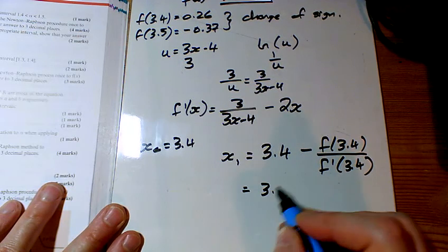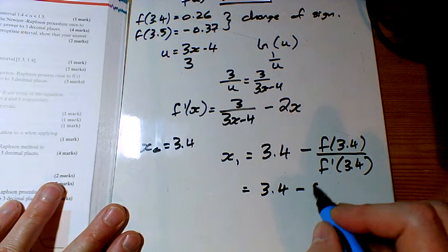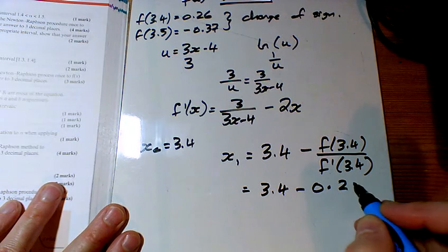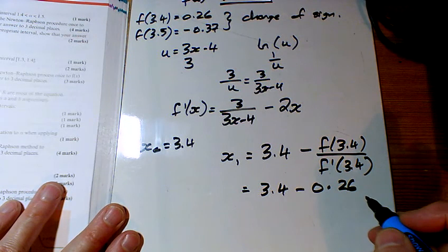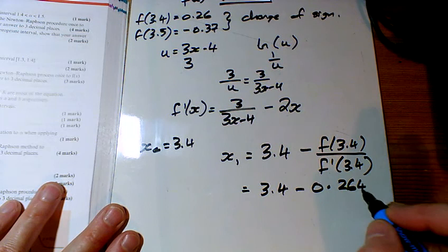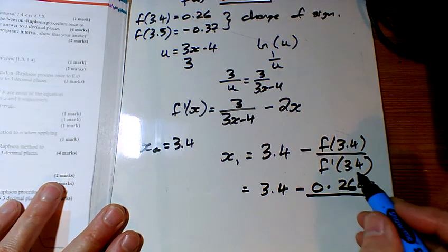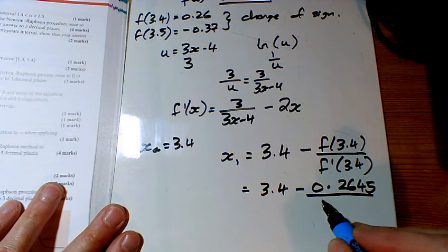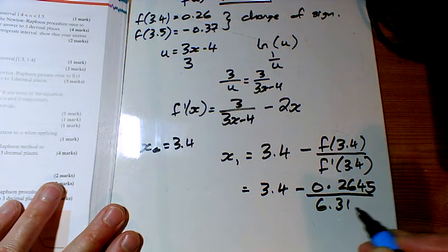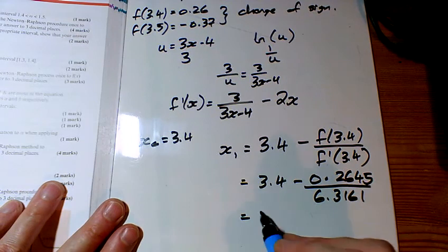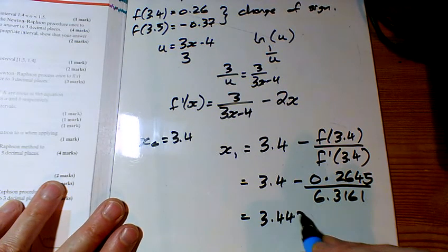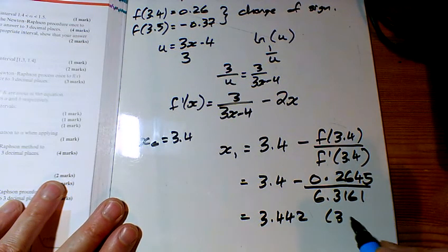So I've got 3.4 minus that bit, which was 0.26. I've got a couple of extra decimal places this time, 0.264526. And this bit here, tap that in, I'm getting 6.3161. So tapping all of that in, I've got 3.442 to 3 decimal places.